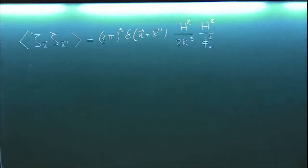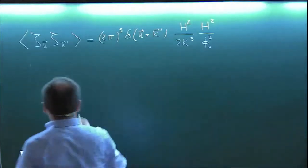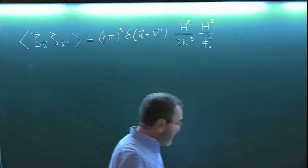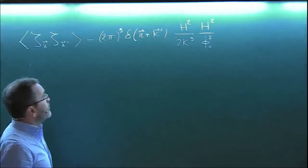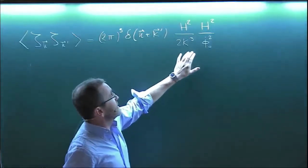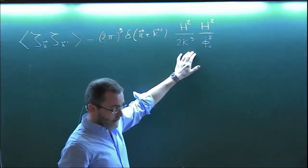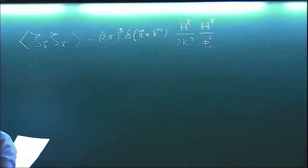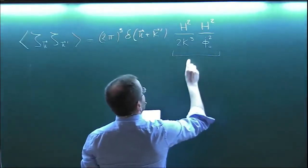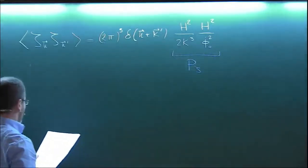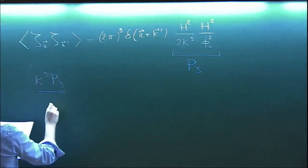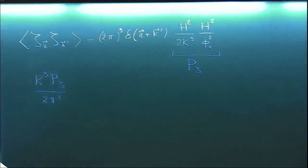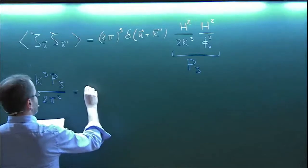We are going to restart from this formula which I copied here. It's the two-point function of zeta that we calculated this morning. The first observable you can read from this is the normalization of the power spectrum. The quantity which is experimentally constrained — if I call this P_zeta, the power spectrum of zeta — is measured to be 2.16.